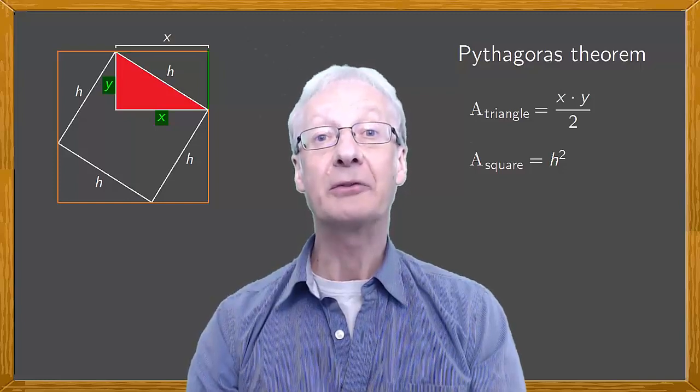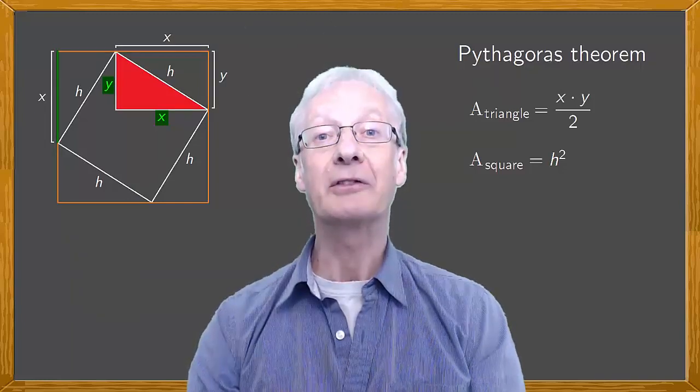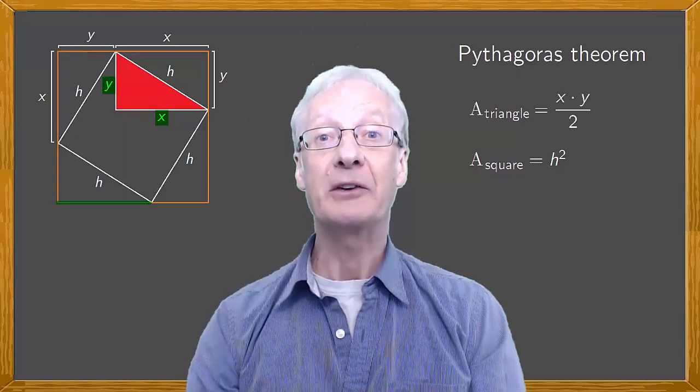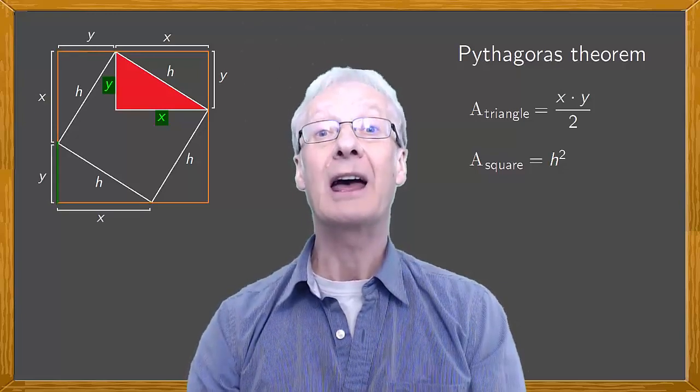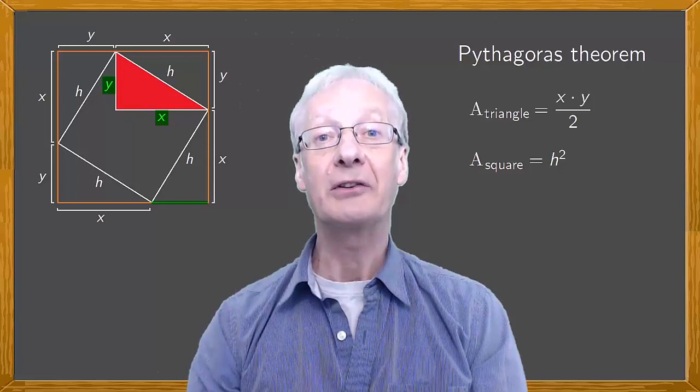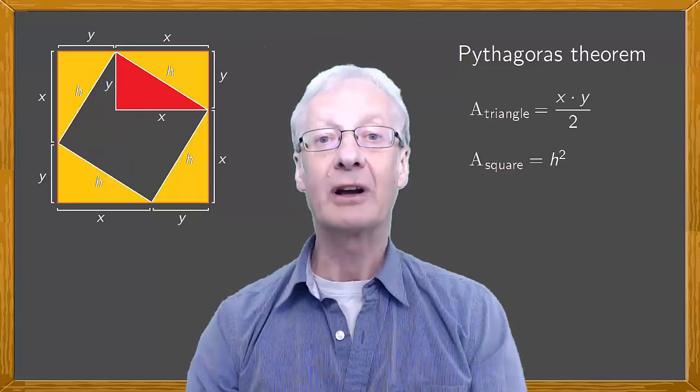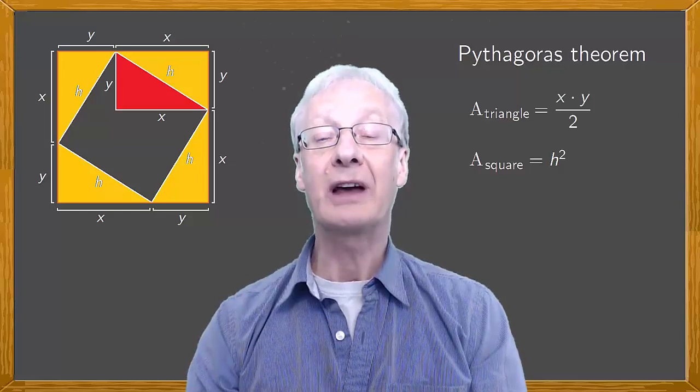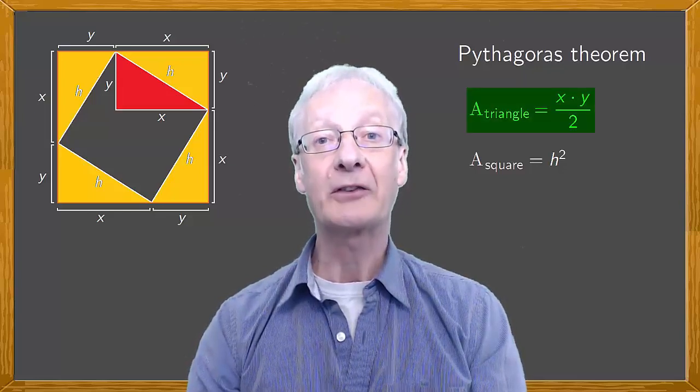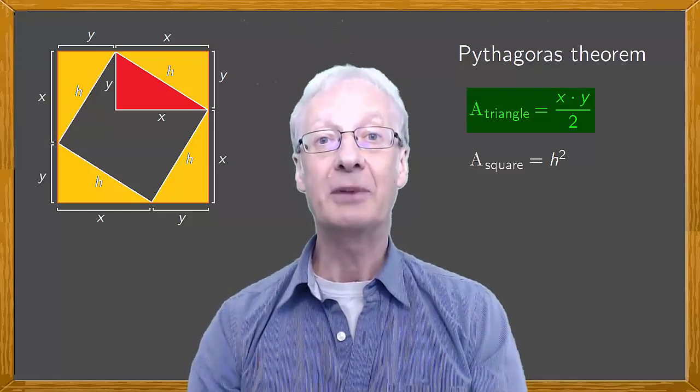This measures x. This measures y. The sides all measure x and y accordingly. So, the area of these triangles is equal to that of the original triangle, x times y divided by 2.